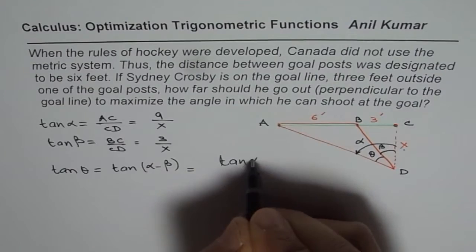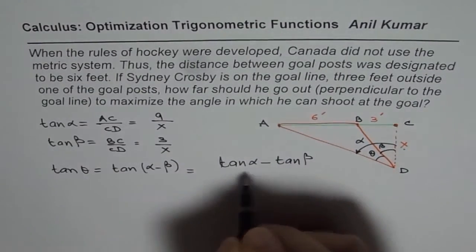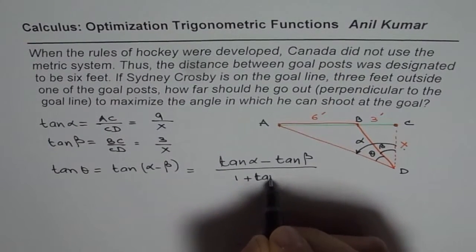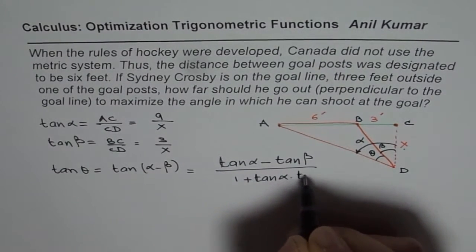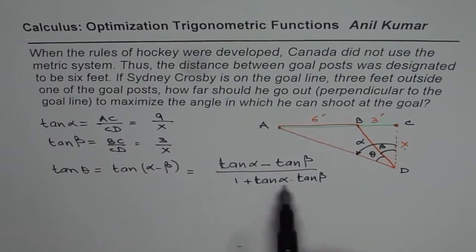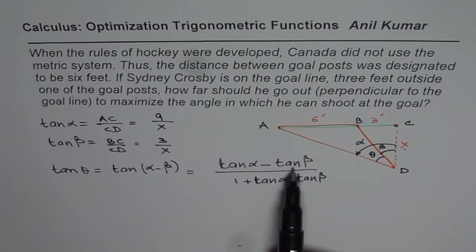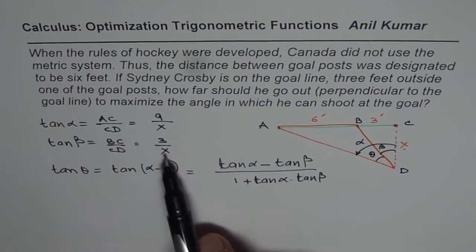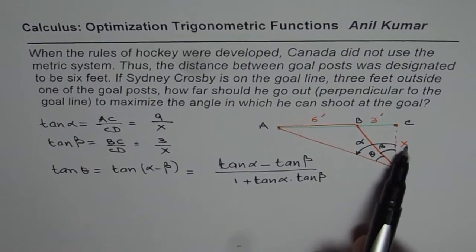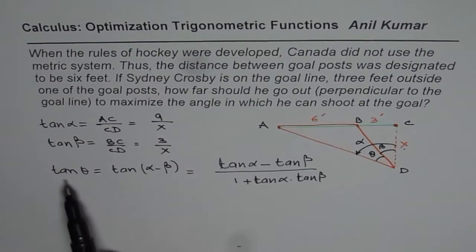So it is tan alpha minus tan beta divided by 1 plus tan alpha times tan beta. Now in this expression, you can substitute tan alpha and tan beta with 9 over x and 3 over x. So you get your equation in terms of x, which we need. And we have theta here.